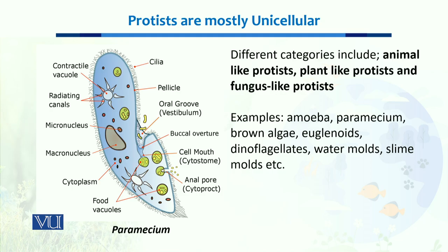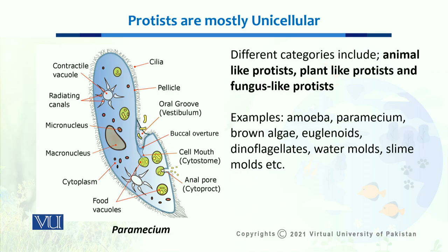In examples, we have a wide variety of protists that includes amoeba, paramecium, brown algae, euglenoids, dinoflagellates, water molds, slime molds, etc. This slide shows a typical example of a protist — paramecium. Paramecium is a unicellular protist which roams around freely in water bodies, and you can see the typical structure of the paramecium body.